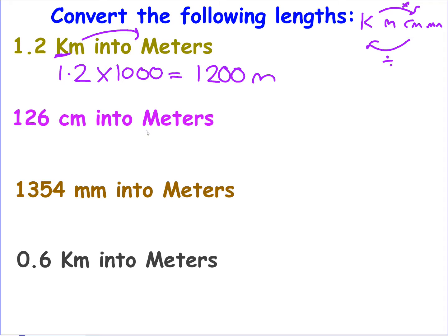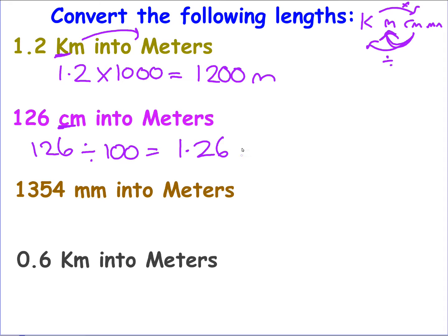Now going from centimetres to metres — I'm going from a small unit to a bigger unit, so I need to divide. I've got 126 and I'm going to divide it. My prefix says centi, so I divide by 100. That gives me 1.26 metres. This is where our linked learning on multiplying and dividing by 1000 comes in.